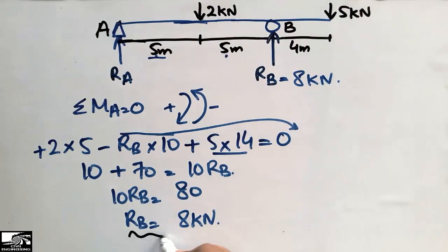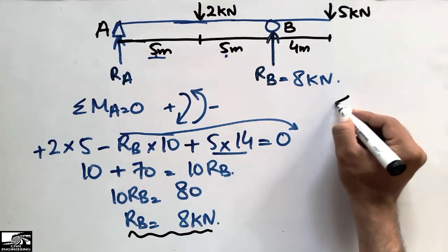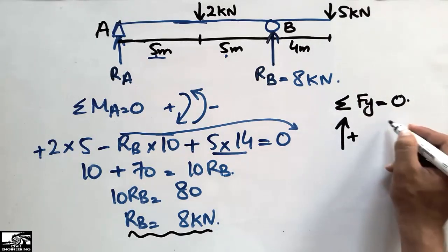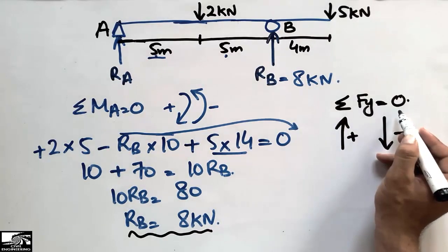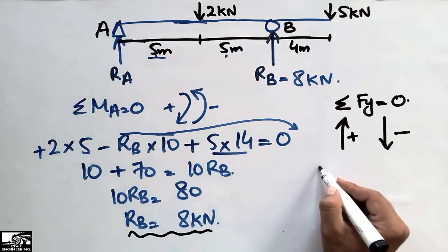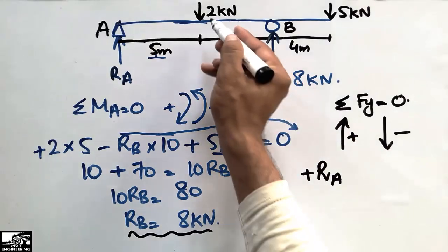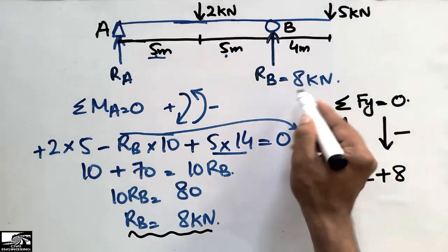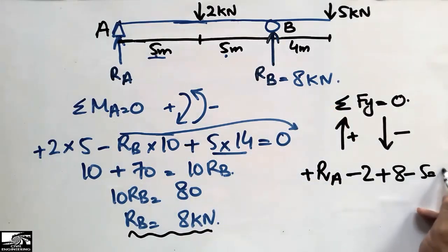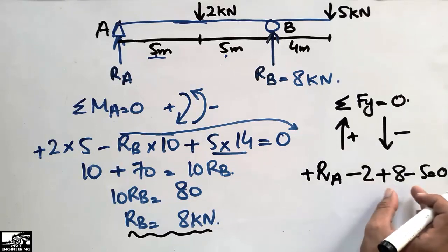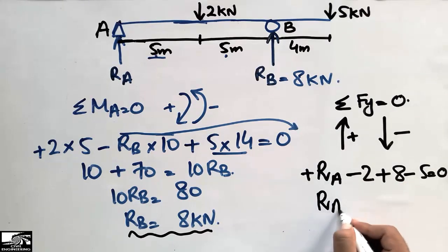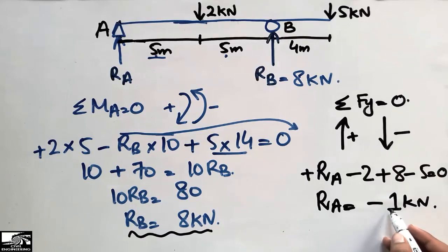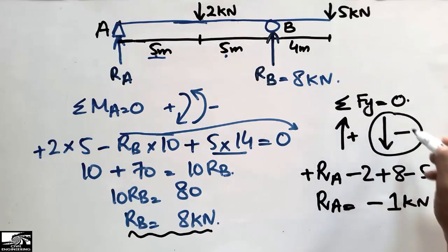Now to find RA, we take the summation of vertical forces equal to zero, with upward forces positive and downward forces negative. RA is upward (+RA), 2 kN acts downward (−2), RB = 8 kN acts upward (+8), and 5 kN acts downward (−5). Solving gives RA = −1 kN. The negative sign means RA actually acts downward, so we revise the direction of RA to be downward with a magnitude of 1 kN.